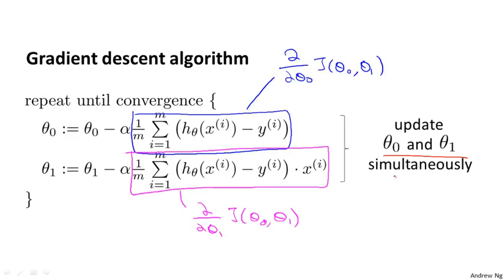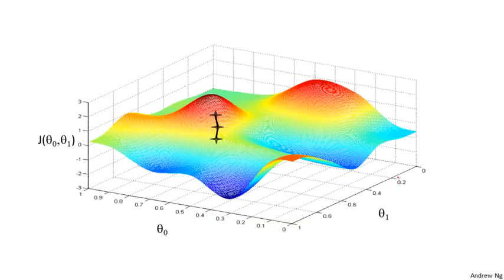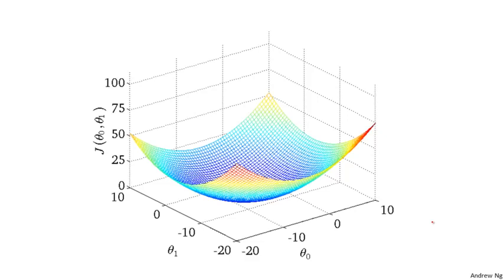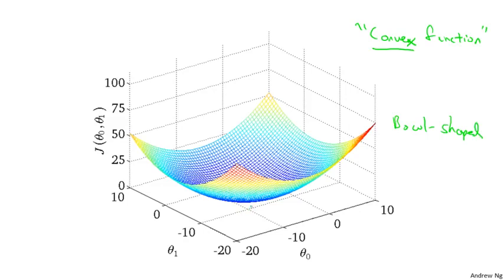Let's see how gradient descent works. One issue with gradient descent is that it can be susceptible to local optima. When I first explained gradient descent, I showed a picture of it going downhill on the surface, and we saw how depending on where you initialize it, you can end up at different local optima. But it turns out that the cost function for linear regression is always going to be a bowl-shaped function. The technical term for this is a convex function — informally, a bowl-shaped function with no local optima except the one global optimum. So gradient descent on this type of cost function will always converge to the global optimum.